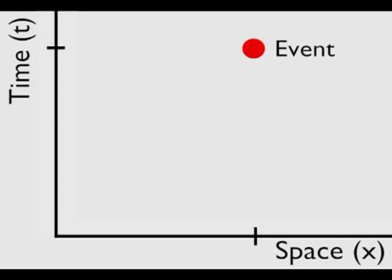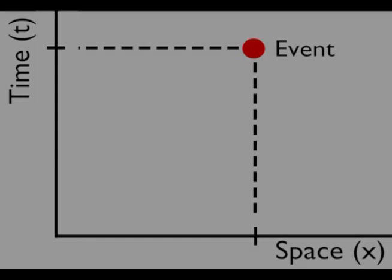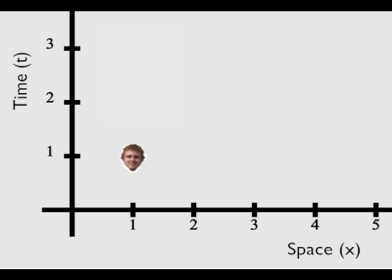A point on a spacetime diagram is called an event. An event is something in spacetime with a designated time and place. Take Tyler, for example. Tyler is standing and is going to clap his hands. Let's consider that Tyler clapping his hands together is an event. On a spacetime diagram, we would give that clap a specific time and position such as x equals 1 and t equals 1.